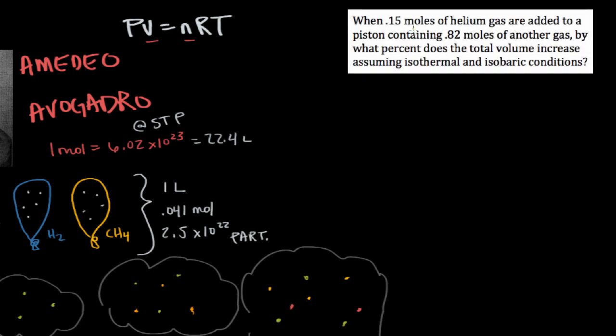When 0.15 moles of helium gas are added to a piston containing 0.82 moles of another gas, by what percent does the total volume increase, assuming isothermal and isobaric conditions?